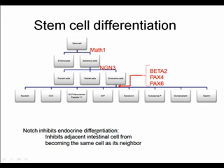Notch inhibits endocrine differentiation in a couple of ways. One important mechanism is that Notch gets expressed in cells that begin to differentiate and inhibits adjacent intestinal cells from differentiating into the same cell type — preventing all cells from making serotonin or all cells from making somatostatin. At a higher level, Notch keeps stem cells proliferating, and at a local level it ensures that adjacent cells form different endocrine cell types.